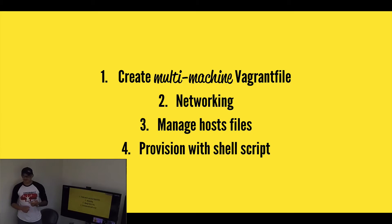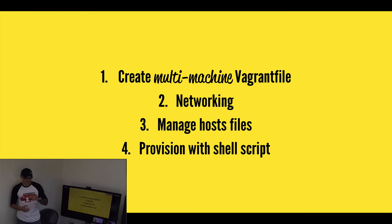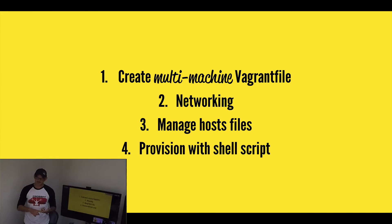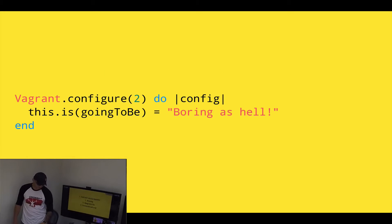We'll be creating a multi-machine Vagrant file. We'll be setting up networking so those two Vagrant machines can talk to each other. We're also going to manage the host files, which will allow those two to talk to each other by hostname. Then we'll do our provisioning using shell scripts to install Puppet, install Puppet Master, install Puppet Agent, and do that initial Puppet run.